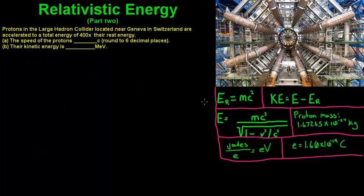I put some equations over here: rest energy equals mc², kinetic energy equals total energy minus rest energy, and total energy equals mc² divided by the square root of 1 minus v²/c². I also put the proton mass in kilograms. For part B, when we need the answer in electron volts, we divide by the charge of an electron, which is 1.6 times 10 to the negative 19th coulombs, and we'll be left with electron volts.